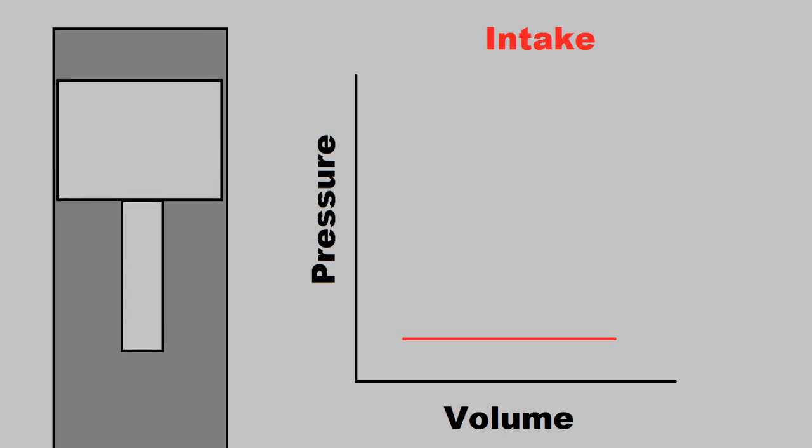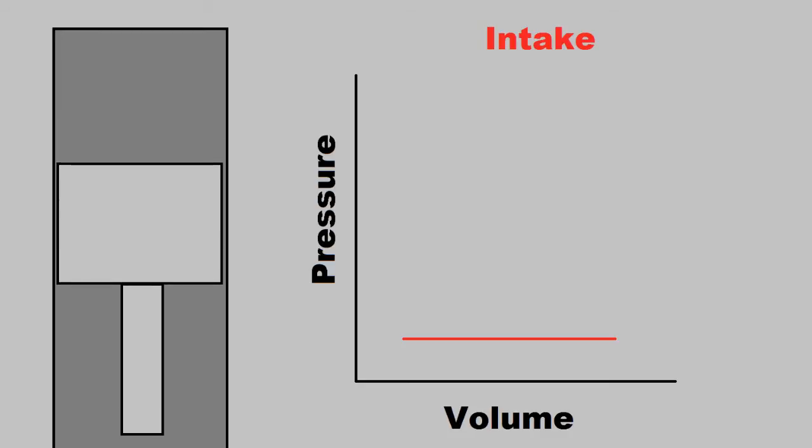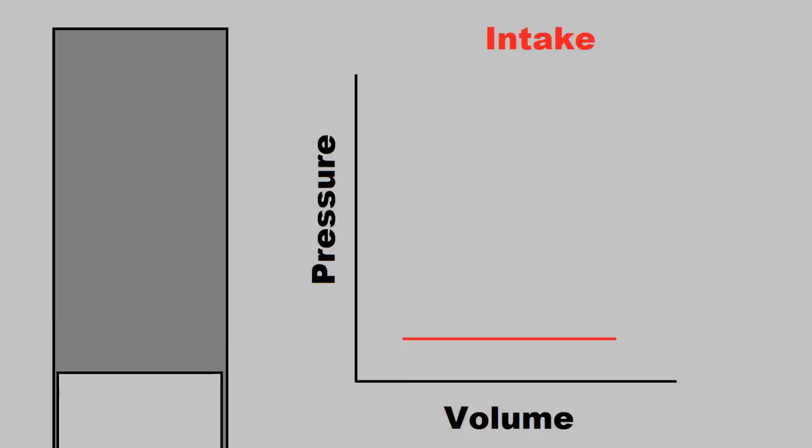This video is going to go over how the Otto cycle works in a four-stroke engine. First stage is the intake stroke. The cylinder moves from the minimum volume to the maximum volume. When it does this, it pulls in fresh air and gasoline.